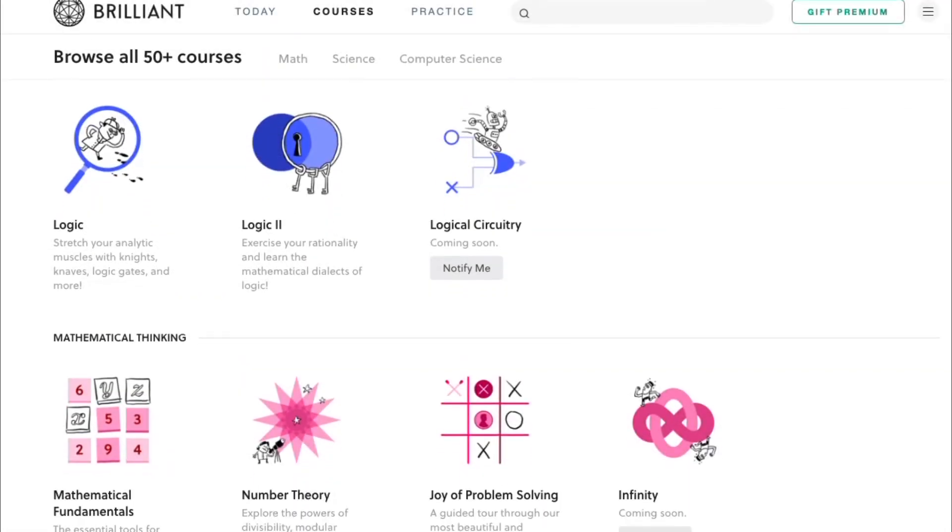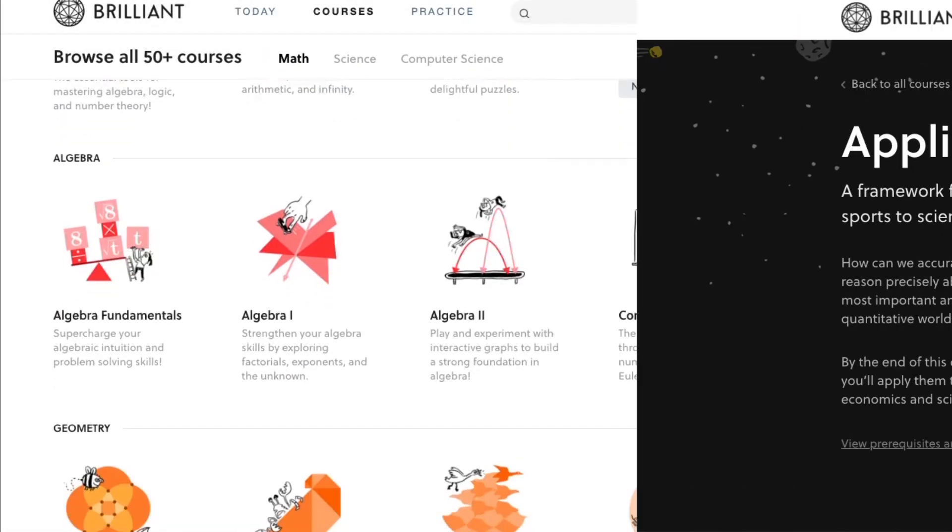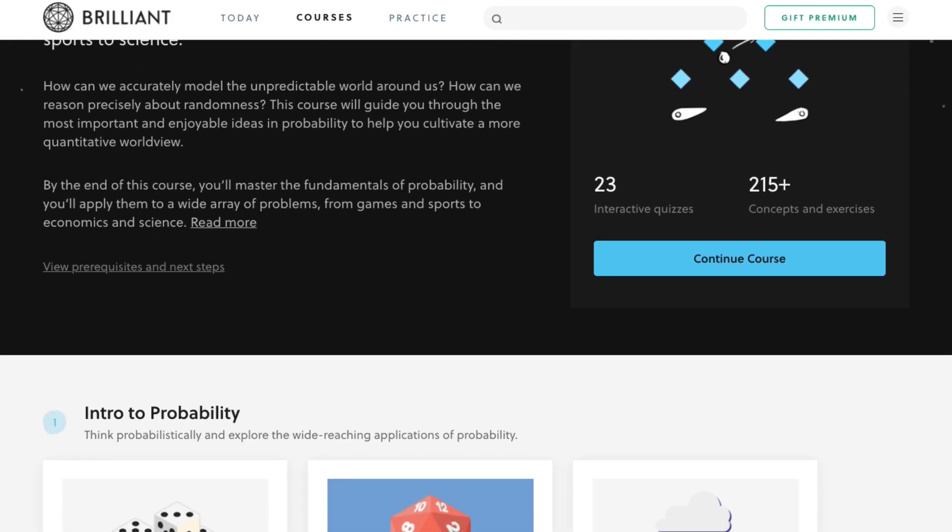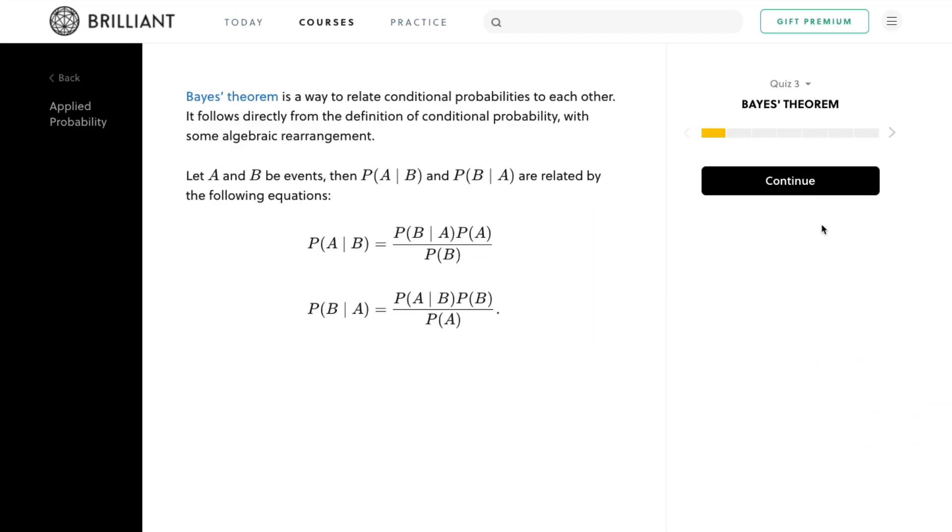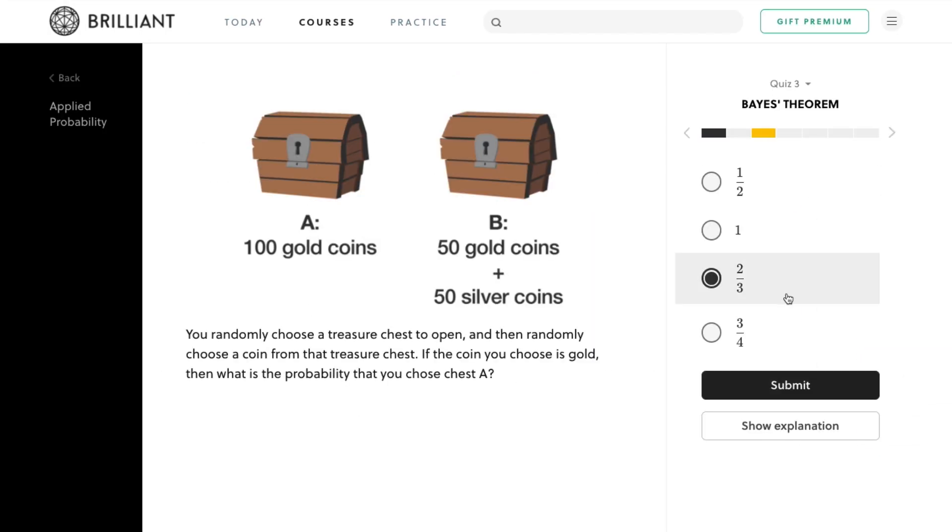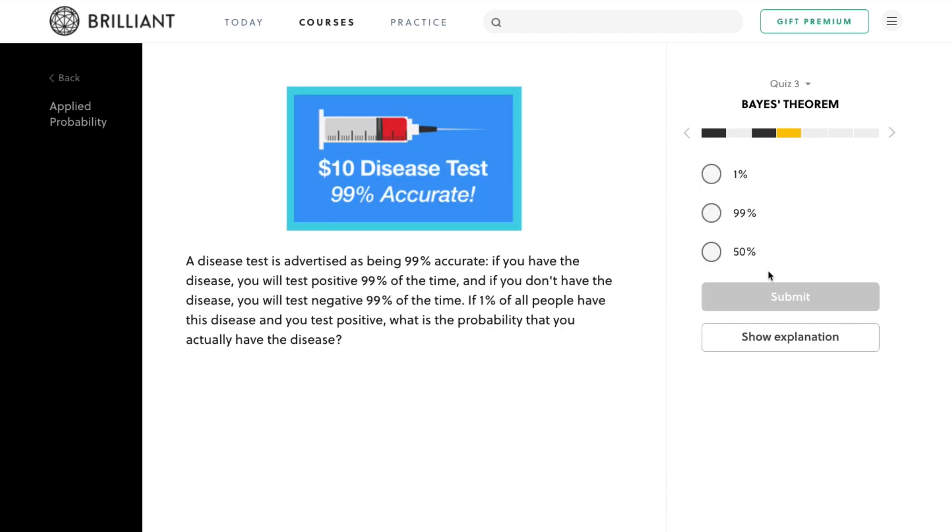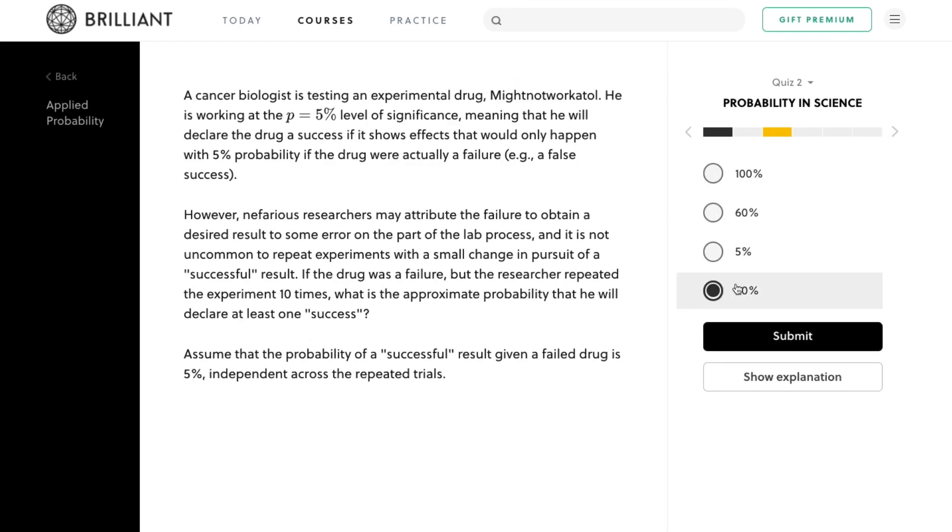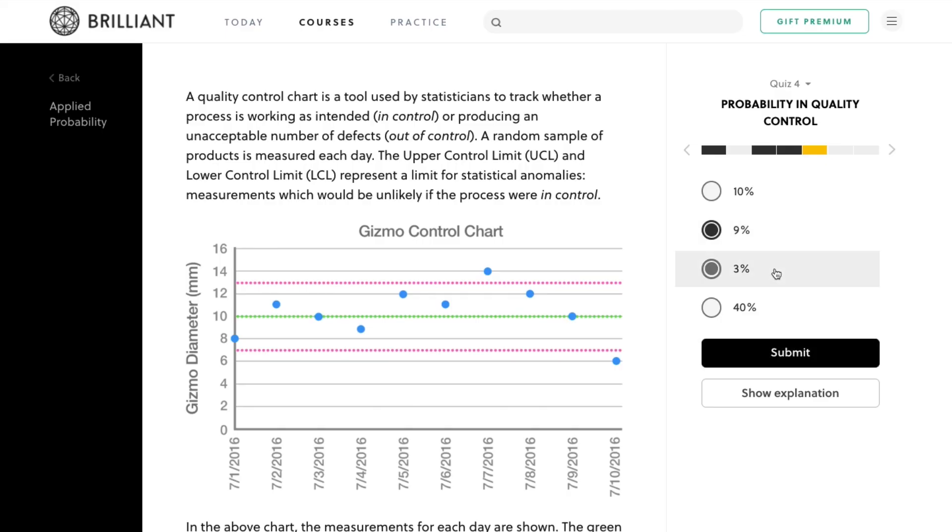One course I would definitely recommend that relates to what we saw here is their Applied Probability course, as this shows you how probability and famous theorems can be used to solve or analyze real-world problems. Examples would include science, similar to what we saw here, quality control, sports, and more.